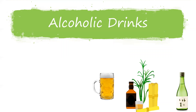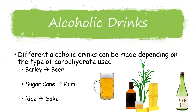We can create lots of different alcoholic drinks because we have lots of different types of carbohydrate sources. Different types of sugars and starches are different carbohydrate sources, so depending on which carbohydrate we use will depend on what type of alcohol we create. If we start with barley and it ferments, we end up with beer. If we start with sugarcane and it ferments, we end up with rum — that is a spirit, so it would also need to be distilled. And if we start with rice, we would get sake, which is a type of rice wine.